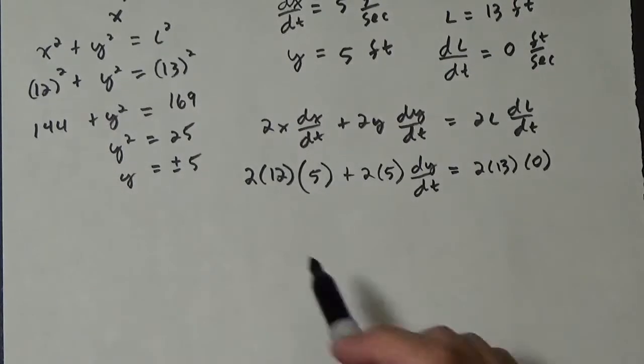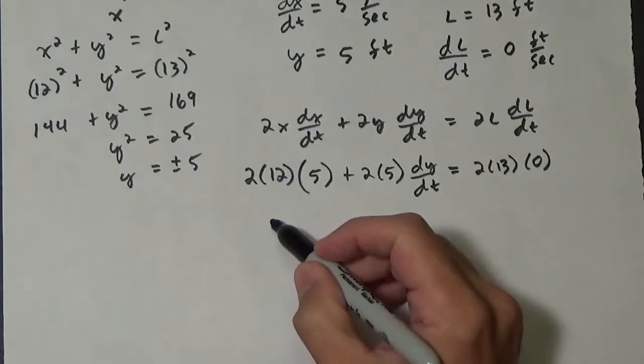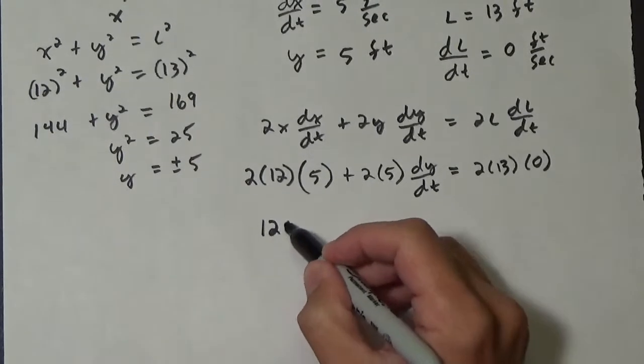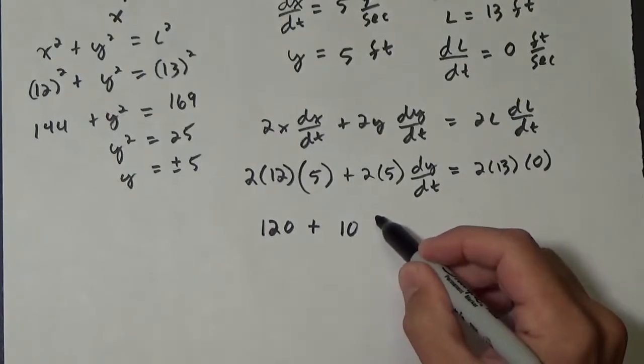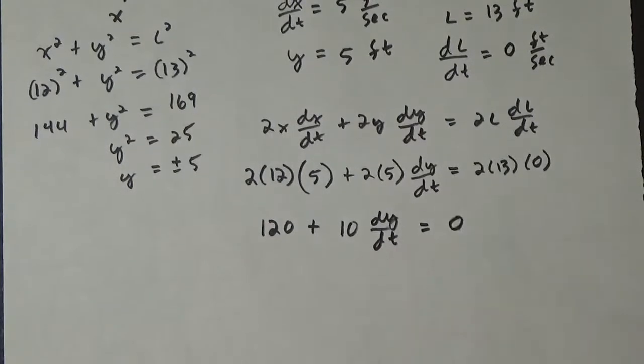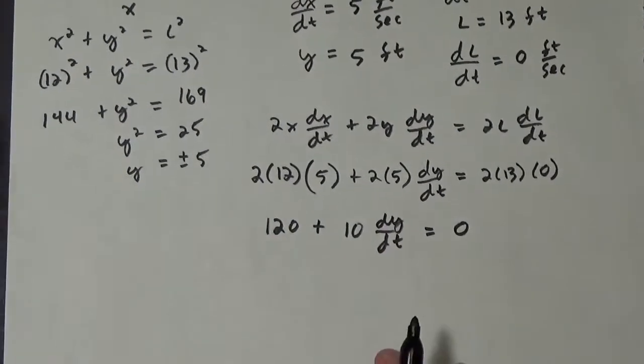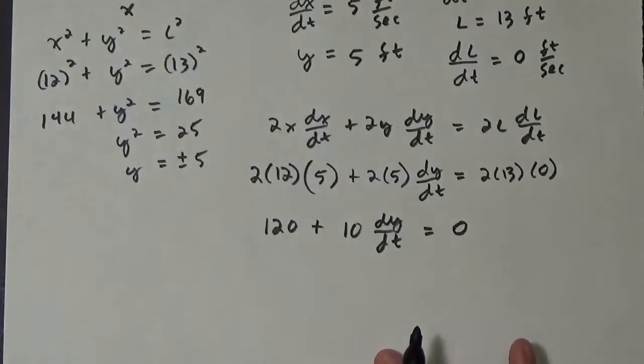Okay, so 2 times 12 times 5, so that's 120. So we have 120 plus 10 dy/dt equals 0. Alright, so then this is the last part. We substituted all the values and now we solve it.